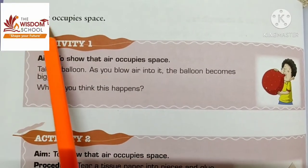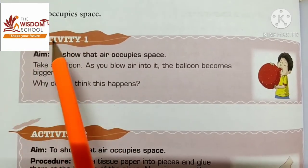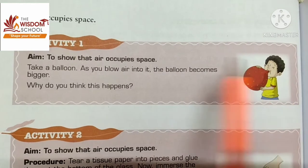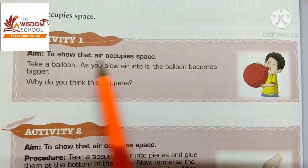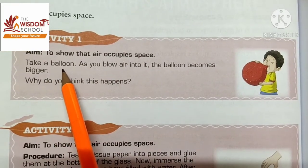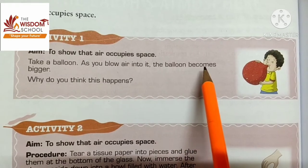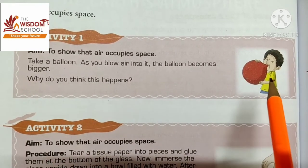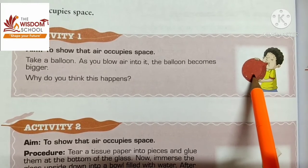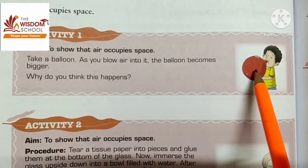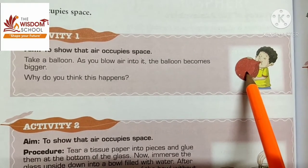The next property is air occupies space. To show this, we can take a balloon and blow it up — the balloon becomes bigger because the air occupies space, and as we blow more air in, it keeps expanding.